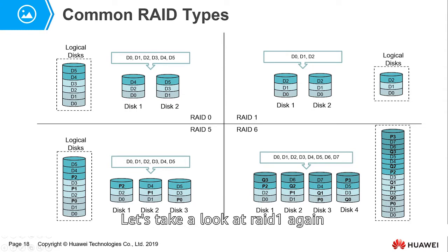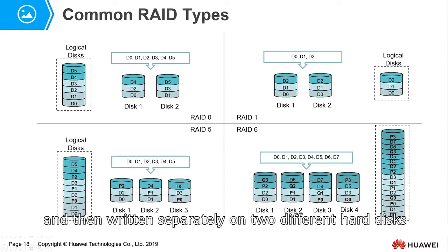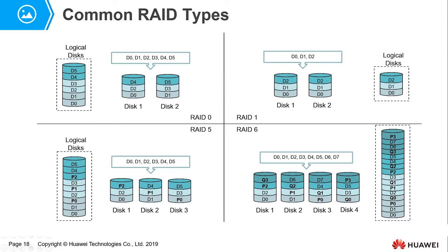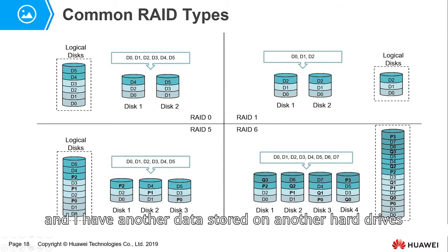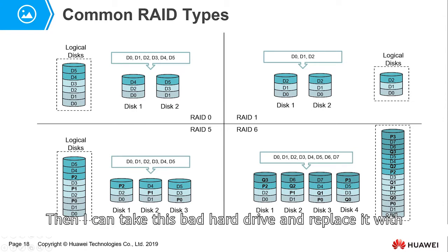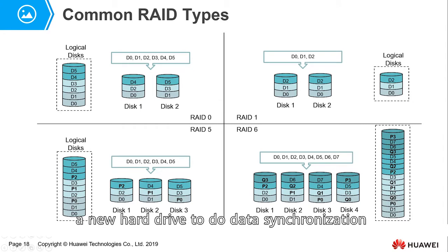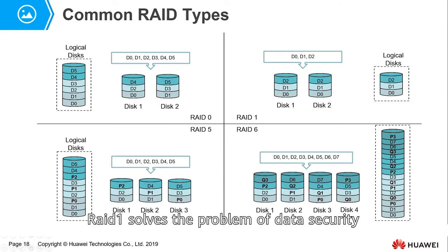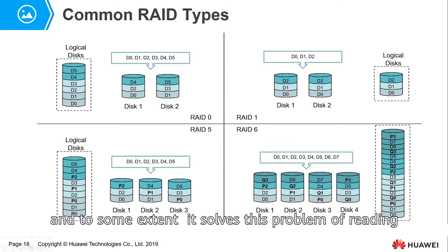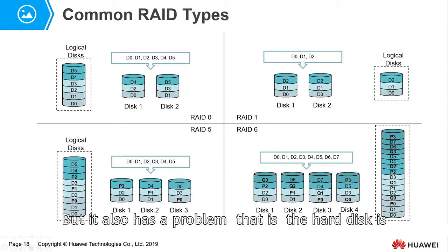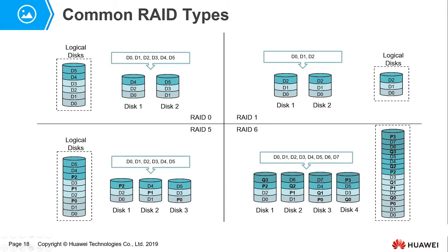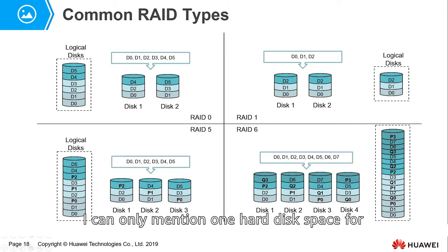Let's take a look at RAID 1. With RAID 1, data is copied into two copies and written separately on two different hard disks. The benefit is that if one hard drive breaks, there is another copy stored on another hard drive. You can replace the bad hard drive with a new one and restore data. RAID 1 solves the problem of data security and to some extent improves read and write performance. However, it has a problem — it is too wasteful of disk space, as two hard drives only provide the space of one.